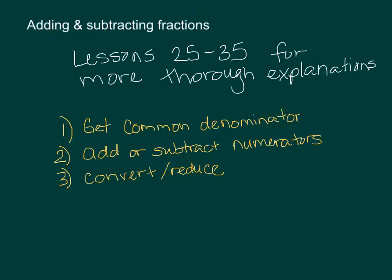With practice it gets fast. After you've found the common denominator, you add or subtract the numerators. Then finally, if it's an improper fraction, convert it to a mixed number, and if it can be reduced, reduce it. These are really the only three steps. You may want to copy those down and have them handy — maybe even write them on your desktop.